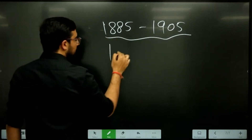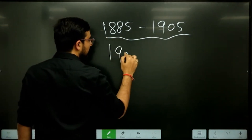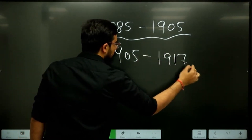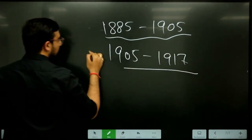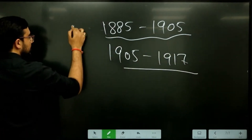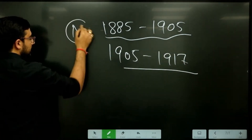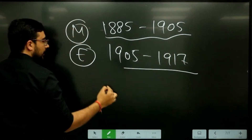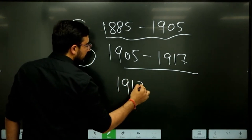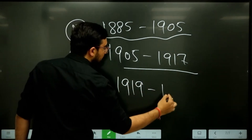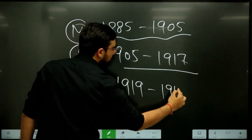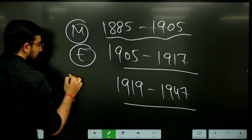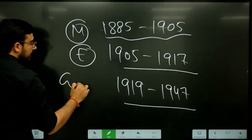Then from 1905 till 1917, there is the phase of extremists and moderates. And then finally, from roughly 1919 to 1947, this is the age of Gandhian nationalism.